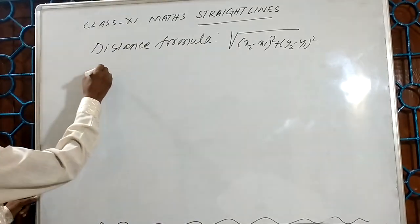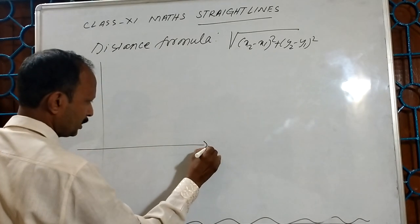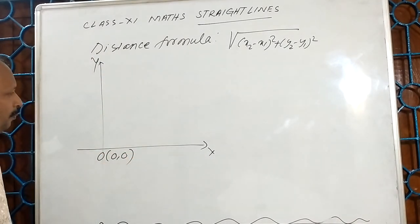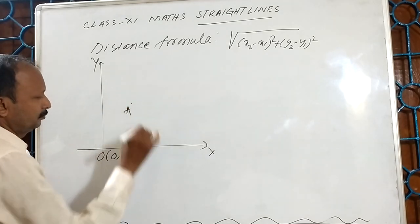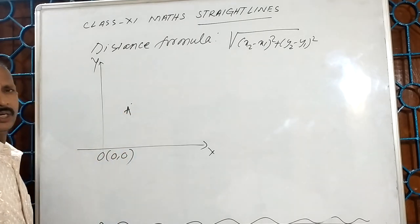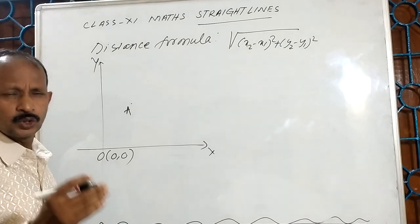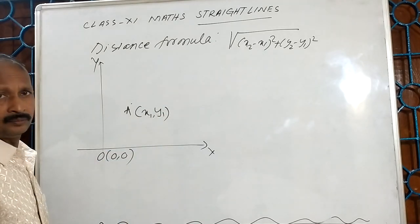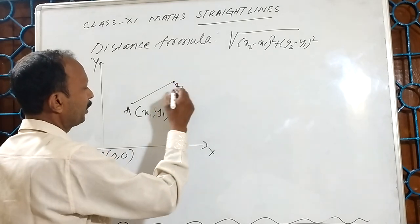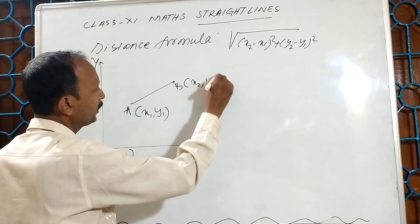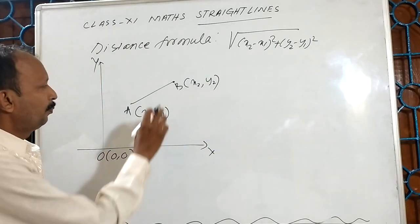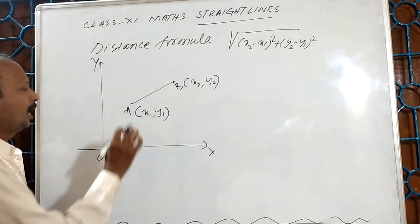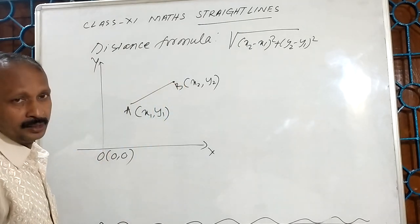See that. This is the x-axis. This is the y-axis. This is the origin. Suppose A is a point. Its position we can know from its x-coordinate and y-coordinate. Suppose its x-coordinate is x1, y-coordinate is y1. And B is another point whose x-coordinate is x2, y-coordinate is y2. The position of point B we can know from its x and y coordinates. Now we have to find the distance between points A and B.